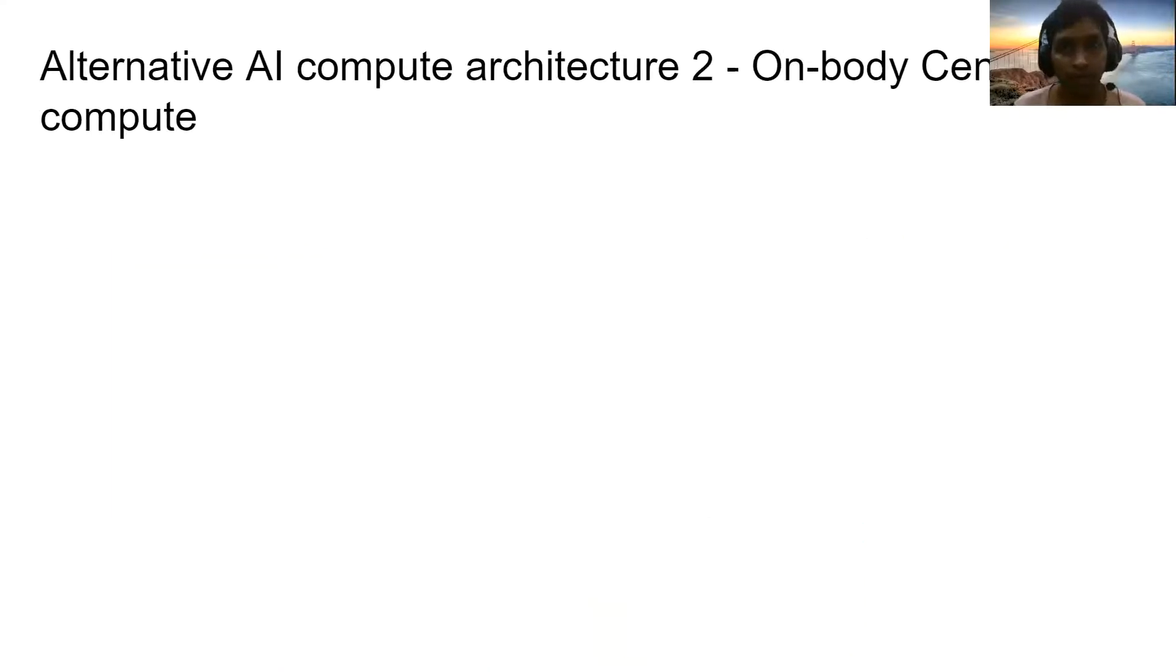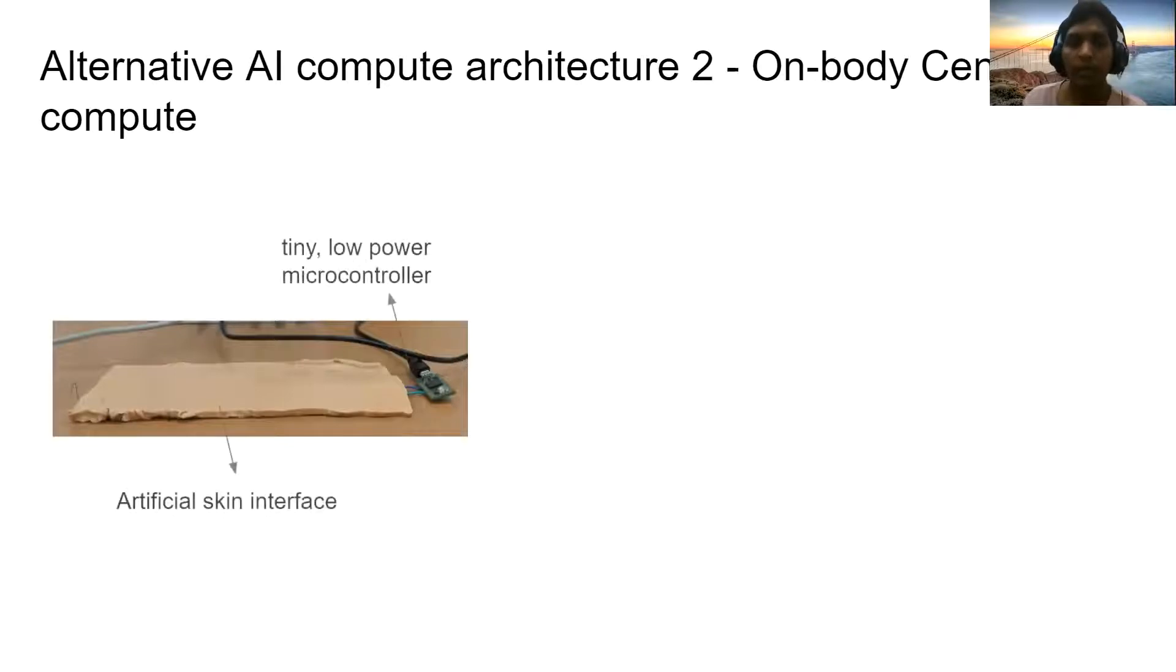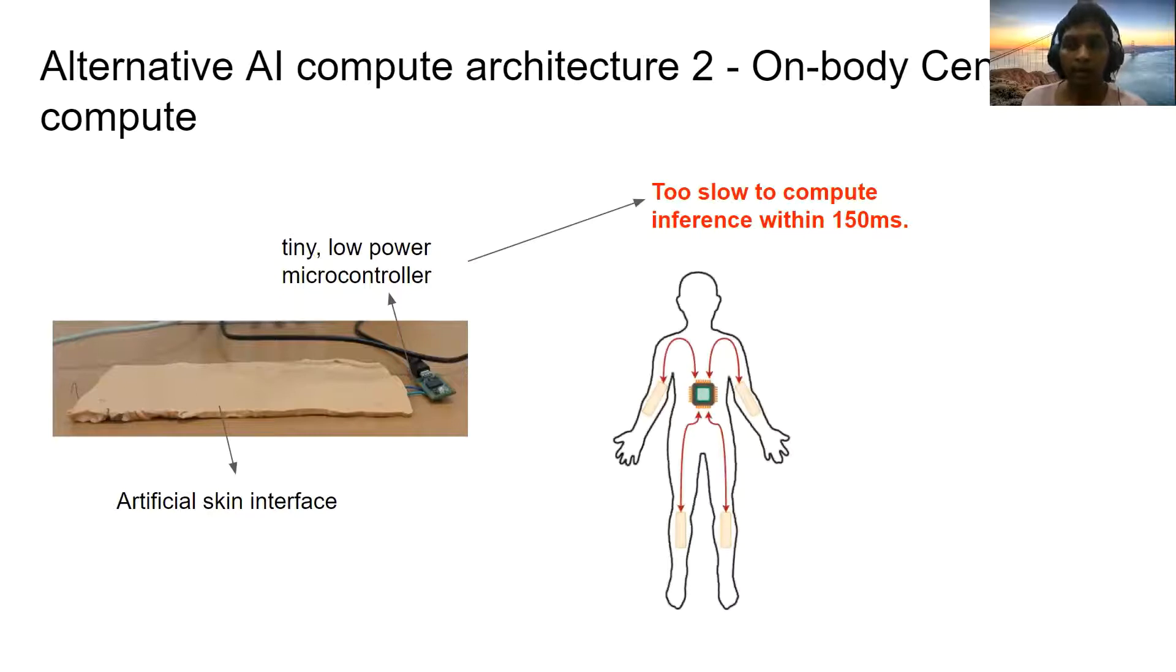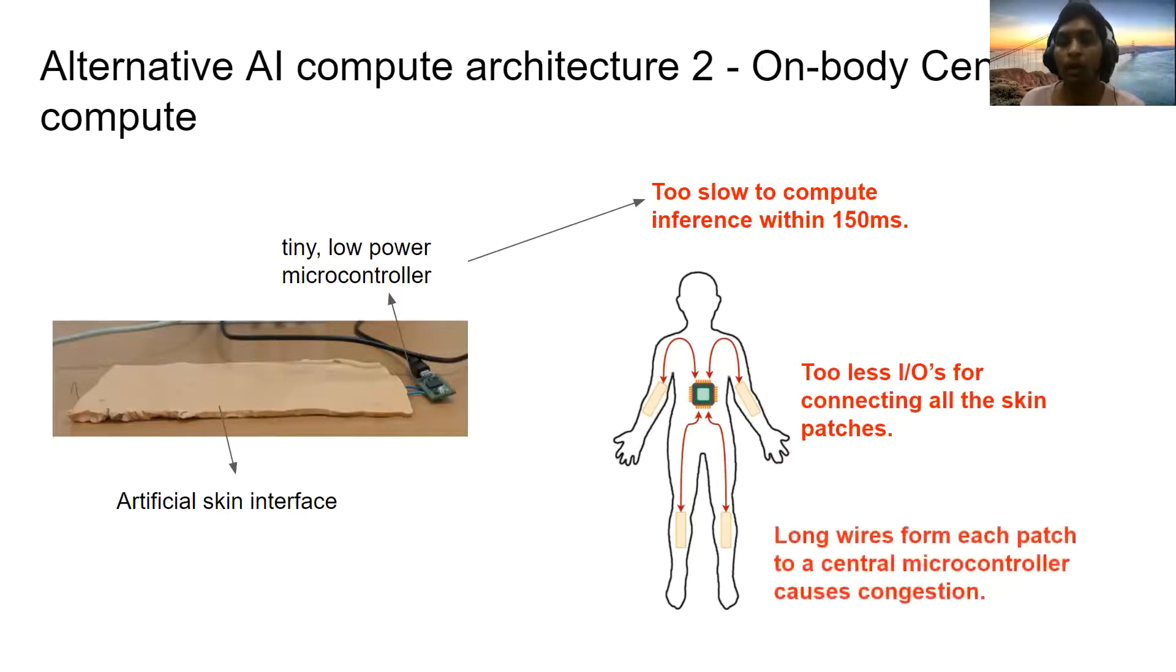Another possible AI compute architecture is on-body centralized compute where each artificial skin interface will be connected to a tiny low power microcontroller like a PIC or an ESP32. The problem with this architecture is most microcontrollers do not have good compute resources, so the inference will be very slow, much higher than 150 milliseconds. Even in the case of a full body setup, there will be multiple artificial skin sensors that will be connected to a single centralized microcontroller which will not be possible with the current microcontrollers because they have very less number of IOs. Apart from that, there will be long wires going on from each of the artificial skin sensor to the centralized microcontroller compute.